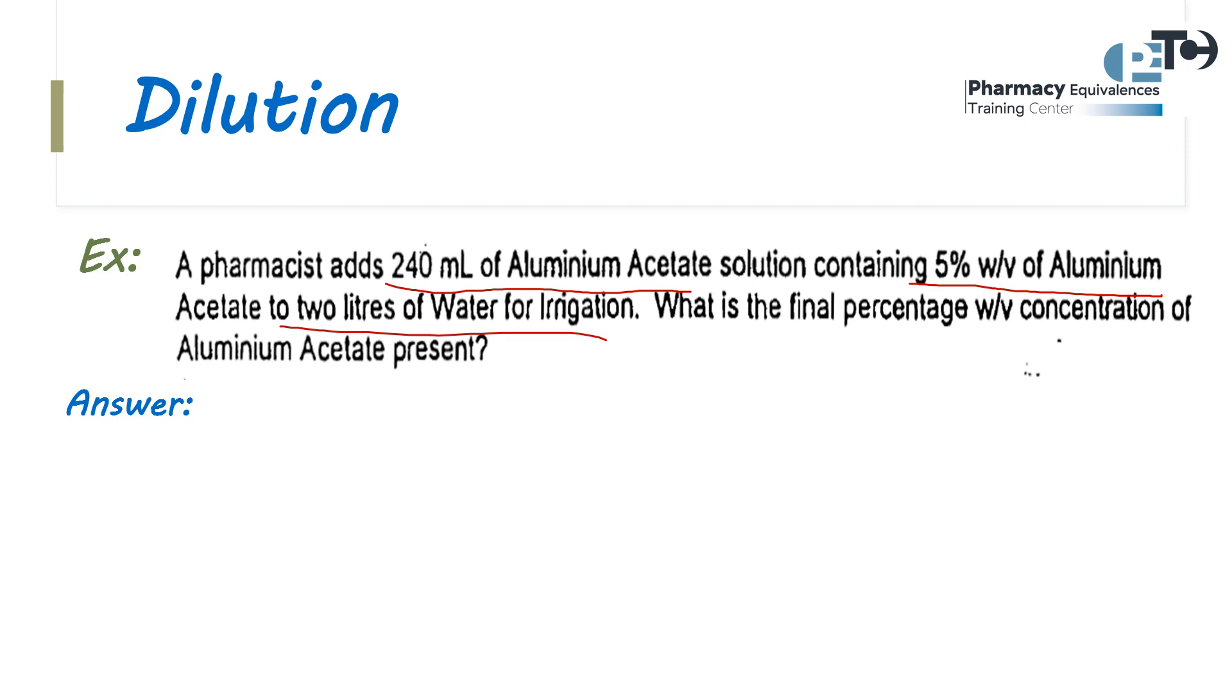Firstly, what is this 240? This 240 will be the volume before dilution, so Vb = 240 mL. What is the 5%? This 5% will be the concentration before dilution, Cb = 5%.